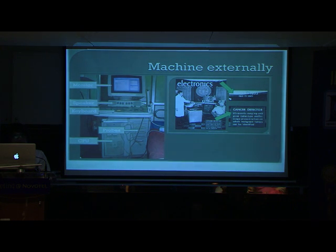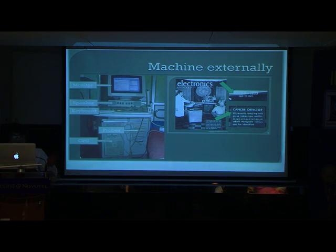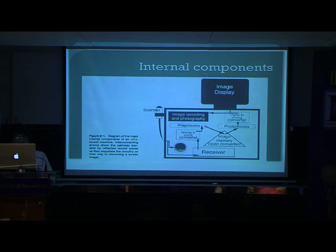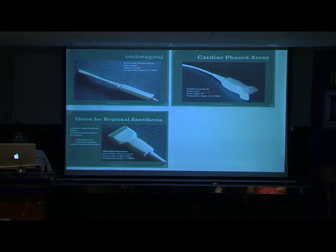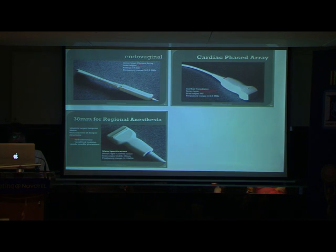The first machine was used for cancer detection — similar to how ultrasonic methods were used to find objects submerged beneath the seabed. The machine has since undergone many transformations with display capability, the scanner, and the CPU (computer processing unit). Various tools were designed for different applications: for cardiac use there is a phased array probe; for transvaginal examination an endocavitary probe; and for regional examination and pain management, a linear probe and a convex probe.